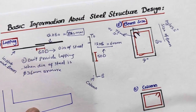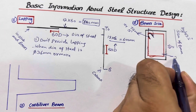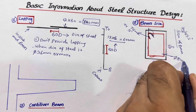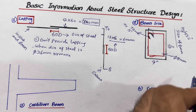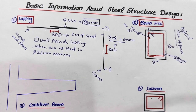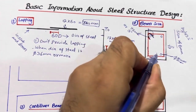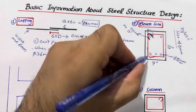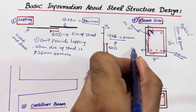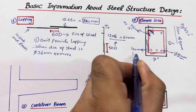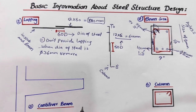The diameter of stirrups should not be less than 8mm. Normally people use 6mm, but that is too small — 8mm is the minimum recommended. When using 12mm main steel bars (for example, two top bars and three bottom bars), the concrete cover in a steel structure design should not be less than 40mm, or 1.5 inches on all sides — top, bottom, left, and right.